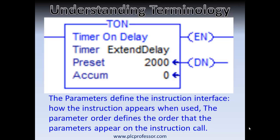If you look at this instruction — this is an on-delay timer — the function of parameters will become clear before long. Parameters are the data ports into and out of an add-on instruction. If you think of parameters in terms of an instruction you're already familiar with, like this TON on-delay timer instruction, it may help place this into context. Now look at the TON instruction — how many parameters do you see? There are actually four visible and a fifth that is usable but not on display. The timer field, or the name of the timer, is not a parameter.